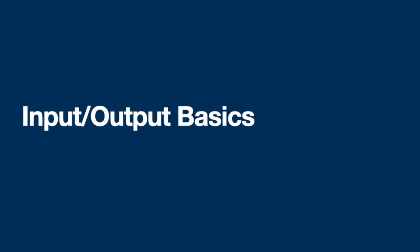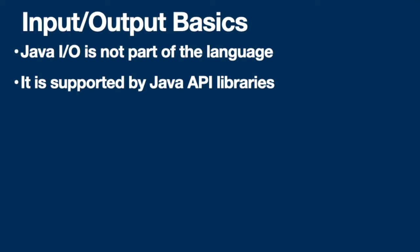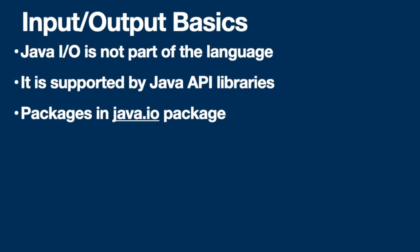Java input/output is a library — it is not part of the Java language itself. It is a library included in the Java Development Kit by the team developing the kit, and it's not part of the language construct. This Java library is included in the Java IO package.